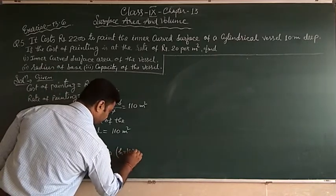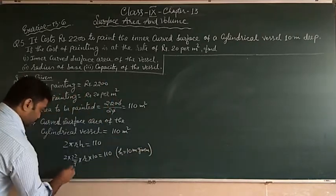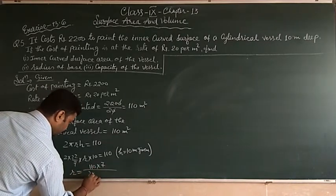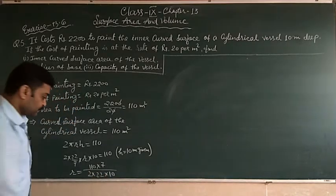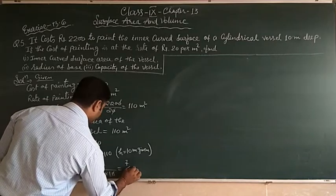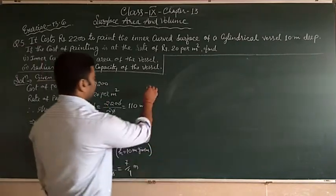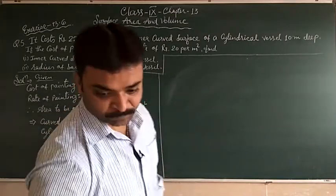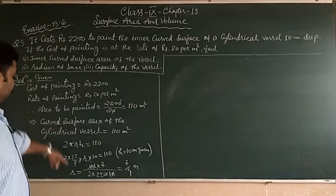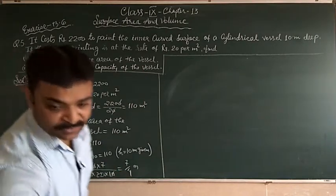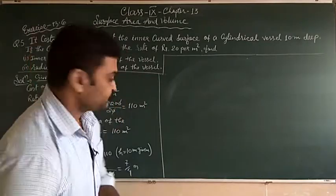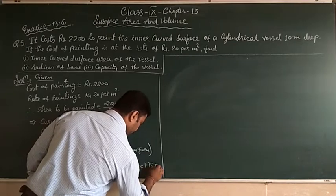So r is equal to 110 into 7 upon 2 into 22 into 10. After canceling, we get 7 upon 4 is the radius of the cylindrical vessel. 7 upon 4, that means 1.75 meters is equal to 1.75 meters.